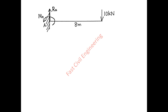Example 4: This is a cantilever beam. Find the support reactions RA, HA, and MA. Here HA equals zero, so we only consider RA and MA. Equation 1: summation of vertical forces equals zero, considering upward as positive. RA upward, minus 10 kN downward equals zero. Therefore RA equals 10 kN.